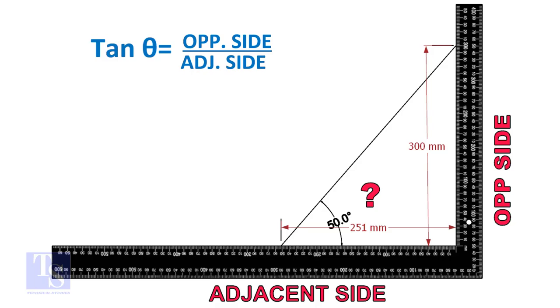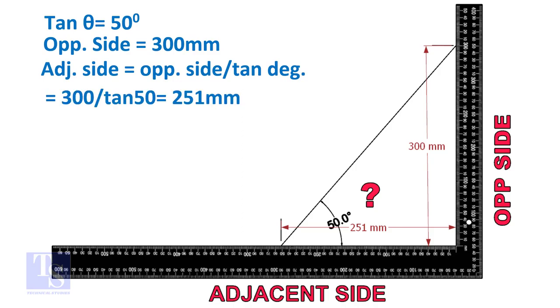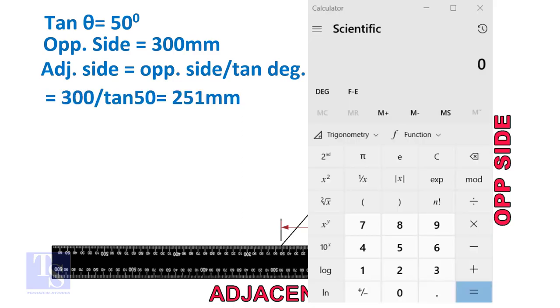Let us assume the opposite side is 300 millimeters. But you can take any suitable dimension as required. Adjacent side is equal to 300 divided by TAN 50 degree. Let us calculate.